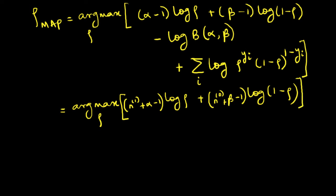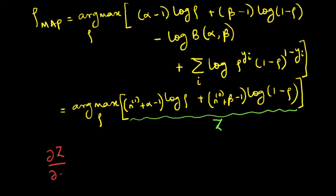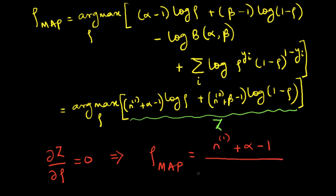Now we just need to maximize this function. We use the concept of maxima and minima: we take the derivative of this term and equate it to zero. This whole expression is our function to maximize — let us call it z. We cannot call it log likelihood because log likelihood was only part of this; this whole thing is the log likelihood plus the log of the prior. Taking dz/d(rho) and equating to zero is fairly simple, so I will leave the steps to you.